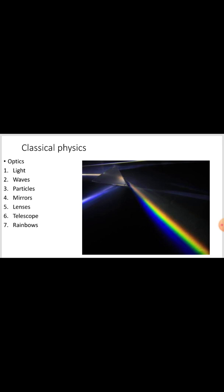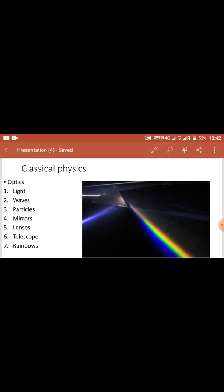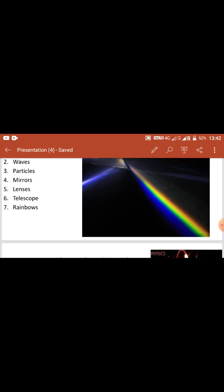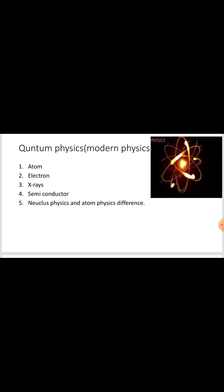Fourth is optics — light, waves, particles, mirrors, lenses, telescopes, and rainbows are all part of optics. This includes the rainbow and the prism light. The prism splits light into its components. Prism and light — these are the key topics of optics.